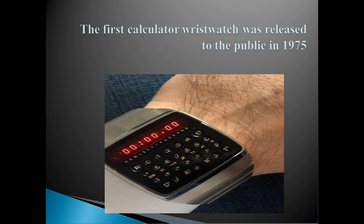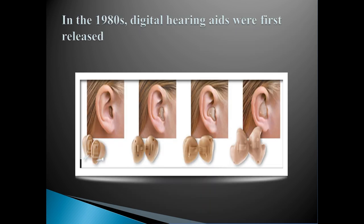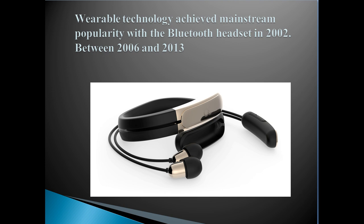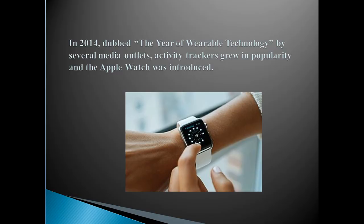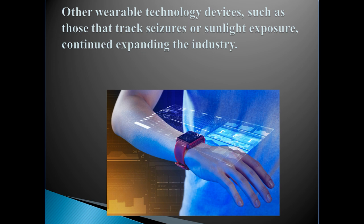Over the next couple of decades, several devices popularized and modernized wearable technology. The first calculator wristwatch was released to the public in 1975. In the 1980s, digital hearing aids were first released, which is an innovative technology used for hearing. Wearable technology achieved mainstream popularity with the Bluetooth headset in 2002. Between 2006 and 2013, iconic wearable technology devices Nike Plus and Google Glass were released. In 2014, dubbed the year of wearable technology by several media outlets, activity trackers grew in popularity and the Apple Watch was introduced. Other wearable technology devices, such as those that track seizures or sunlight exposure, continued expanding the industry.